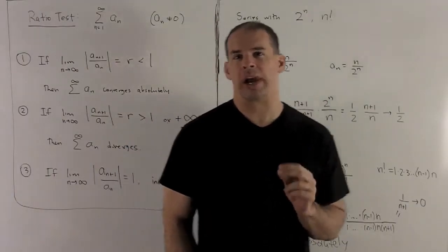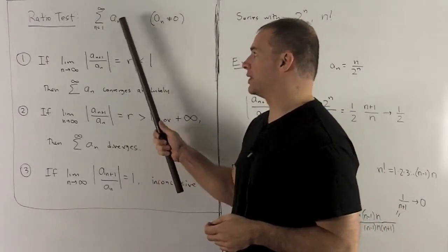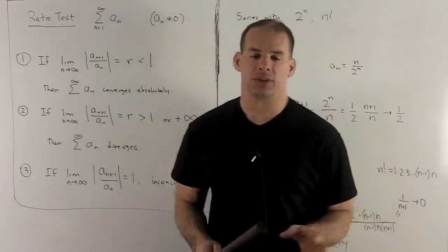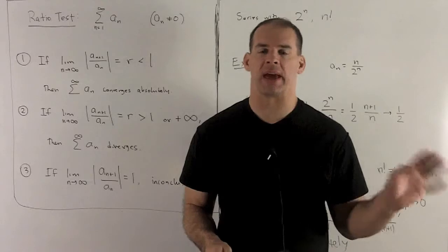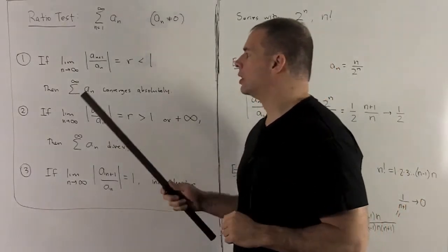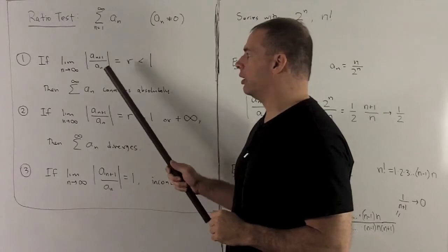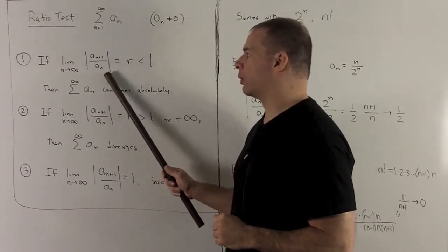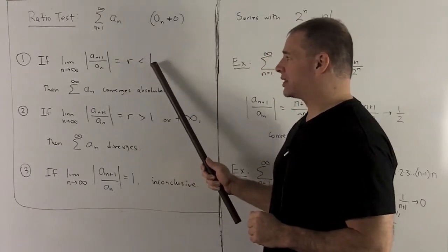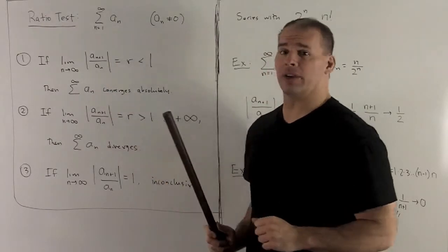Another series test we have is the ratio test. For the series with n going from 1 to infinity of a sub n, we'll assume most of our a sub n are not 0 — it can be 0 for finitely many terms, but past that we disallow 0. We take the limit as n goes to infinity of the absolute value of a sub n+1 over a sub n. If this equals a number r strictly less than 1, then the series for a sub n converges absolutely.